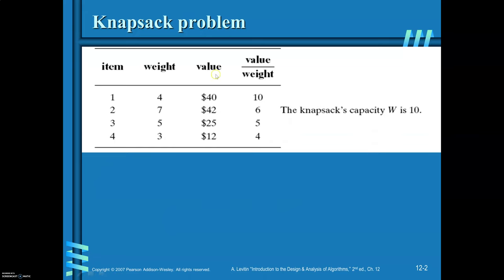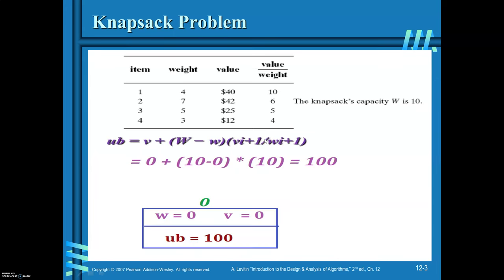This is the instance given to you. You are required to find out the solution by applying the branch and bound design technique. The value-to-weight ratio is already arranged in descending order, and you have four items. For all four items, the value-to-weight ratio has already been found and arranged in descending order.